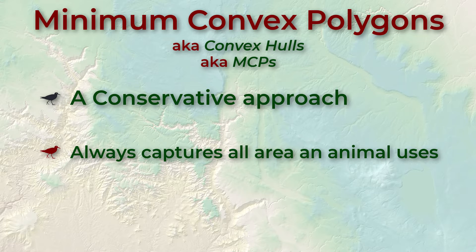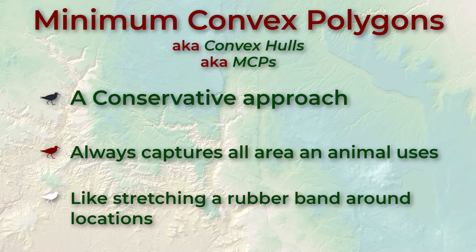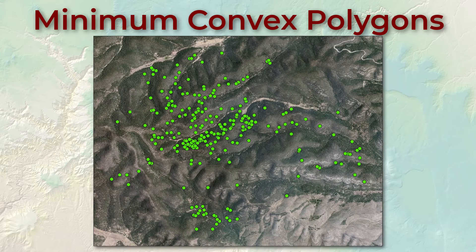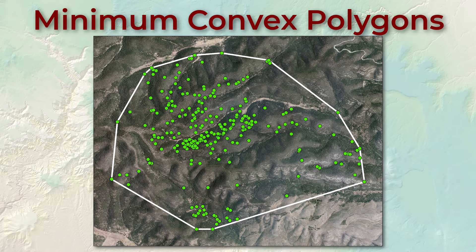The easiest way to think of an MCP is to imagine stretching a rubber band around all the points in your sample — the shape of the rubber band represents the convex hull. For example, suppose we generate an MCP for a set of points: picture all the points as pins stuck in a map, stretch a rubber band around them and you get the convex hull. Notice there's no place on the polygon boundary where the edge bends inward — if you follow the boundary clockwise you turn right at every vertex, at no point bending toward the inside of the polygon. Every bend in the boundary is convex with respect to the inside, hence the name convex polygon.